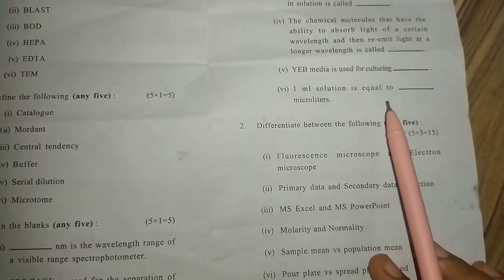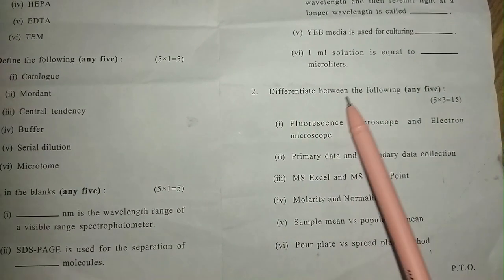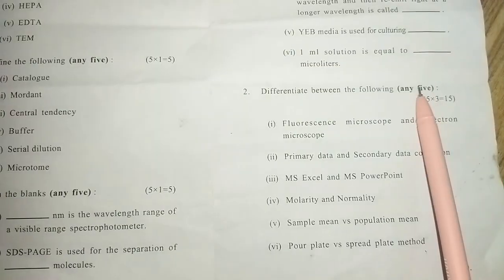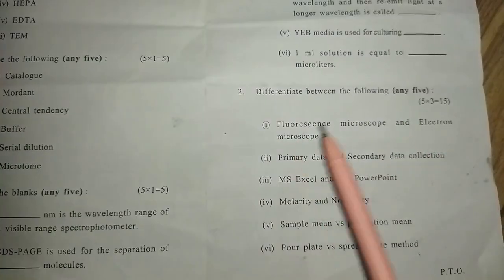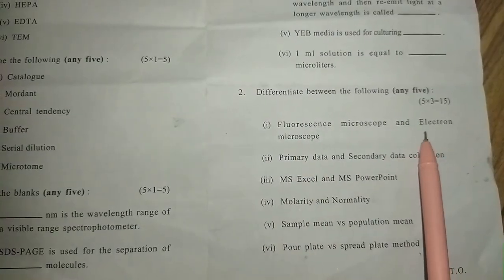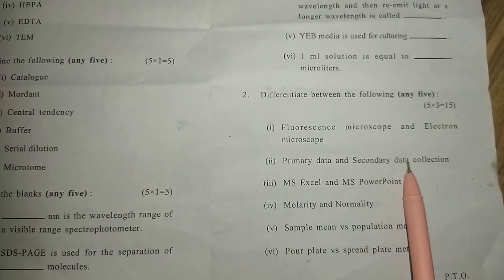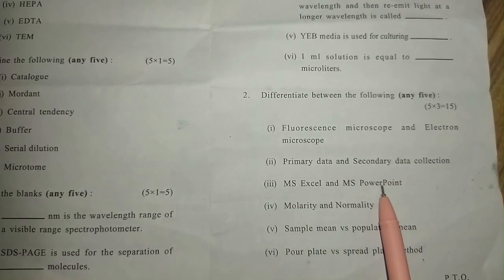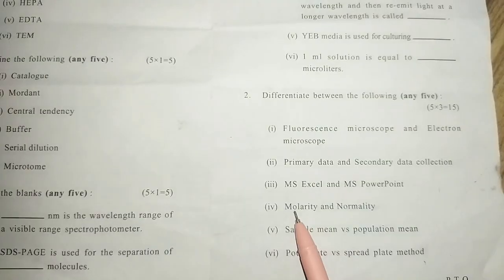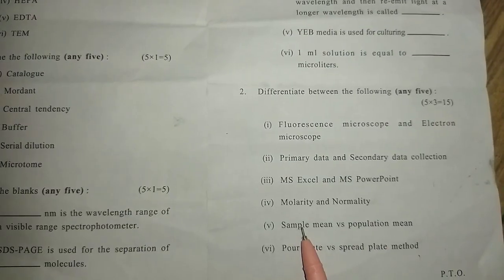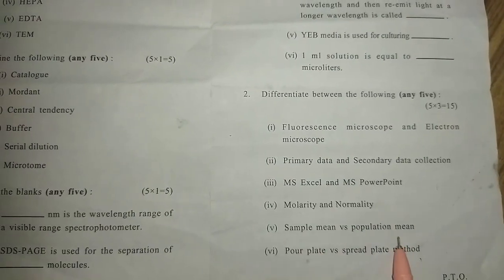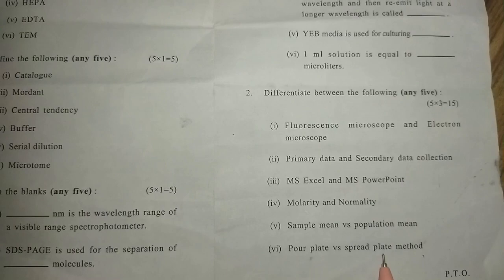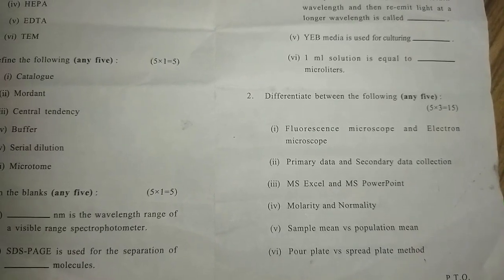Question number two: differentiate between the following. You have to differentiate between any five. The pairs are: fluorescence microscope and electron microscope; primary data and secondary data collection; MS Excel versus MS PowerPoint; molarity and normality; sample mean versus population mean; and pour plate method versus spread plate method.